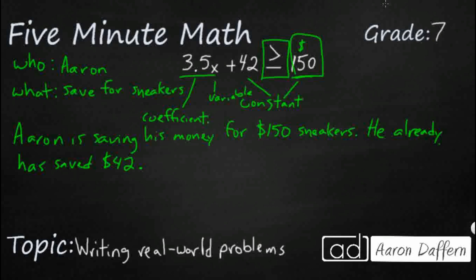And so we will say he gets, let's say a pretty lousy allowance, $3.50 a week for allowance. Alright. So now I've got all of my numbers in there. Only thing I'm missing is my x, my variable.